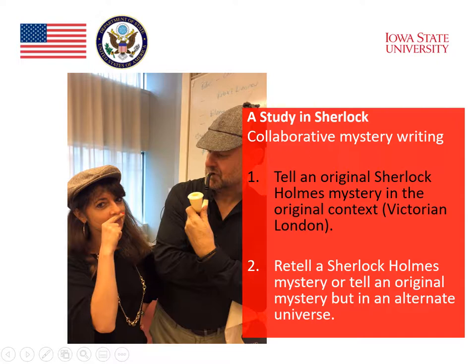This led to the second fanfiction project, a study in Sherlock. Based on input from students, we moved from The Hobbit to the Sherlock Holmes stories and gave students more options to be innovative. Because the Sherlock Holmes stories were mysteries, they were all required to follow the genre of detective fiction and to have Sherlock Holmes solve a mystery. The fanfiction was still to be written collaboratively in groups of three to six, but students were encouraged to be more innovative. They could tell a new mystery in the original universe of the story — Victorian London — or they could tell a new mystery or retell an old one in an entirely different alternate universe. In preparation, students participated in in-class fanfiction writing workshops and were assigned to read examples of Sherlock Holmes fanfiction in addition to several actual Sherlock Holmes stories.